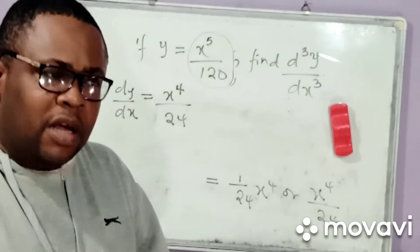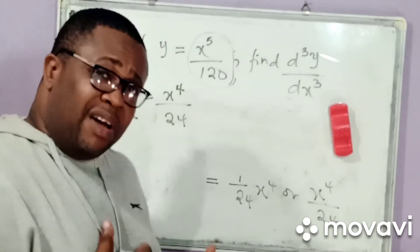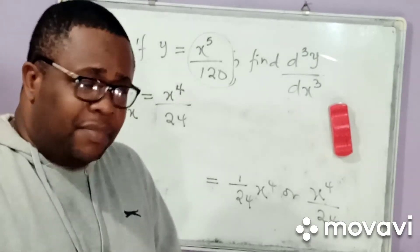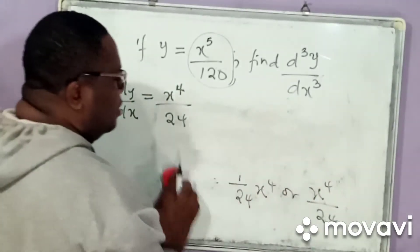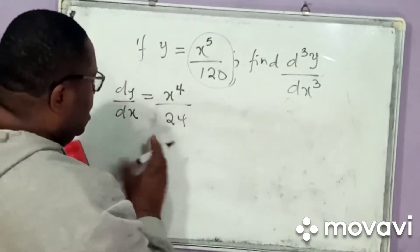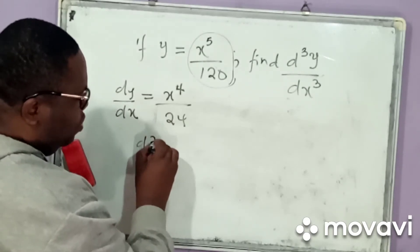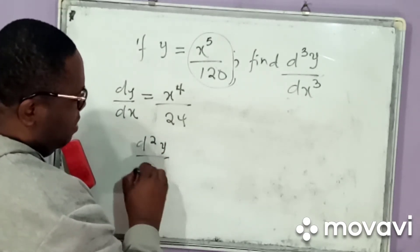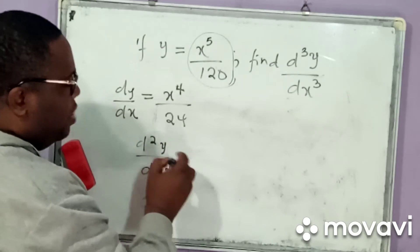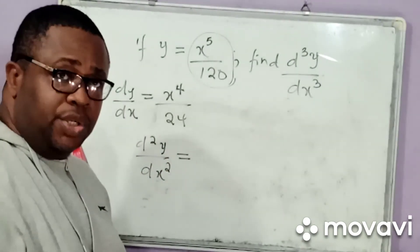So, let's make some space here. So, what it means is that dy by dx is simply equal to x to the power 4 divided by 24. Now, what is d squared y by dx squared? That means differentiate what you have gotten a second time.